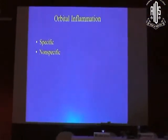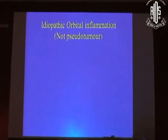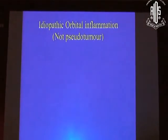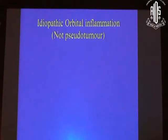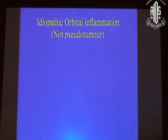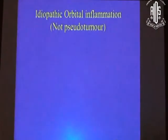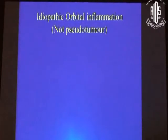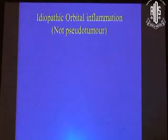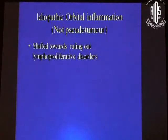I'll try to be as quick as I can on orbital idiopathic orbital inflammation, which is quite a large topic. It used to be called pseudotumor mainly because when you did a scan or x-ray you could see a lesion in the orbit, but when you biopsied it, it wasn't a tumor. So that's why the term pseudotumor was used — obviously not anymore. It's called idiopathic orbital inflammation.